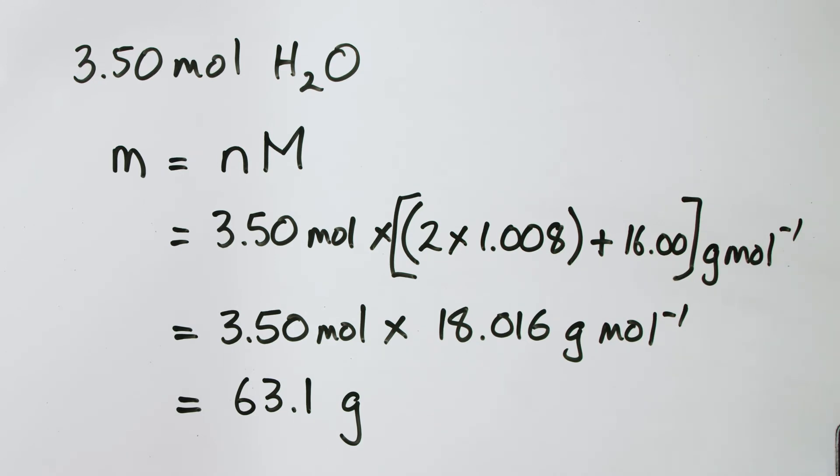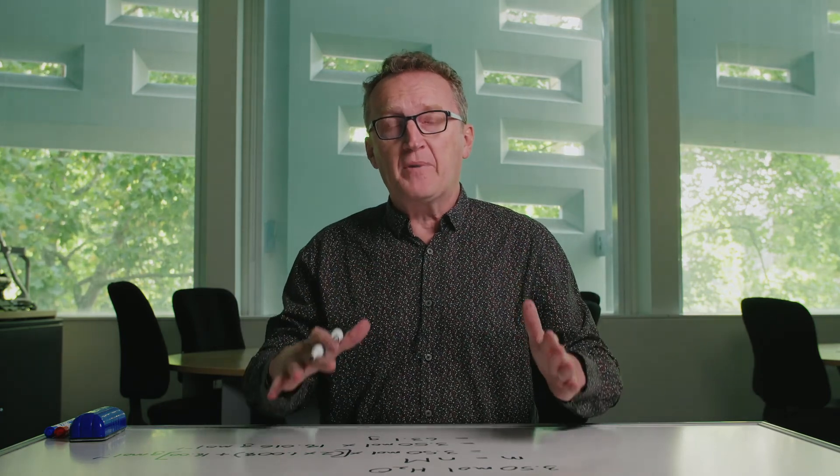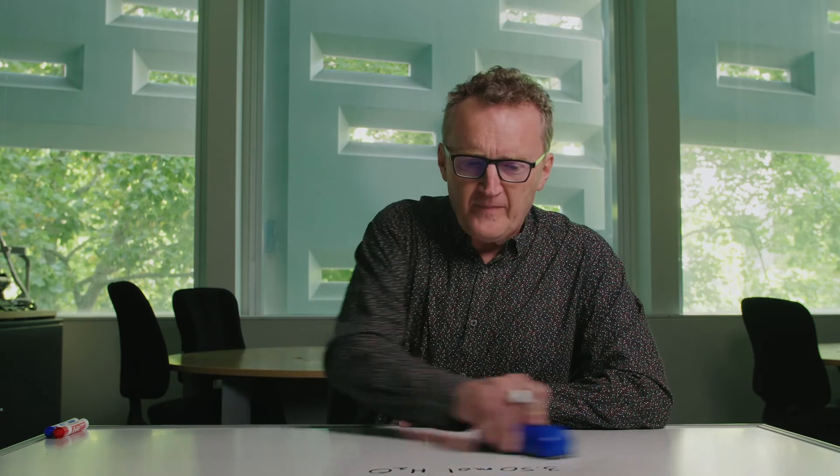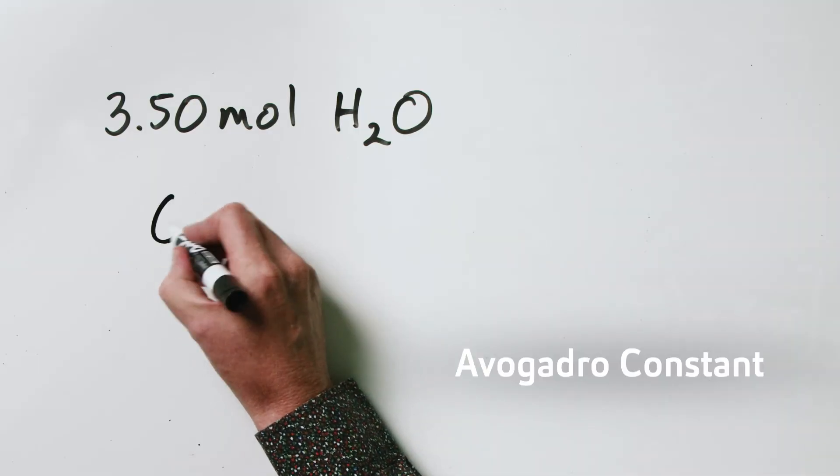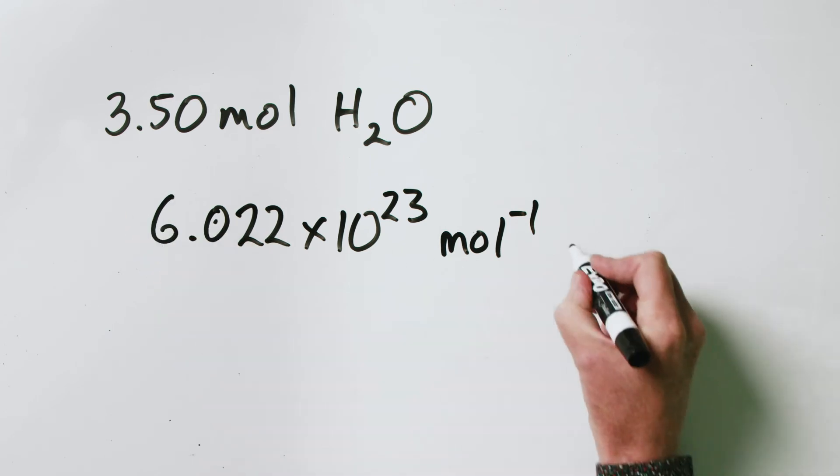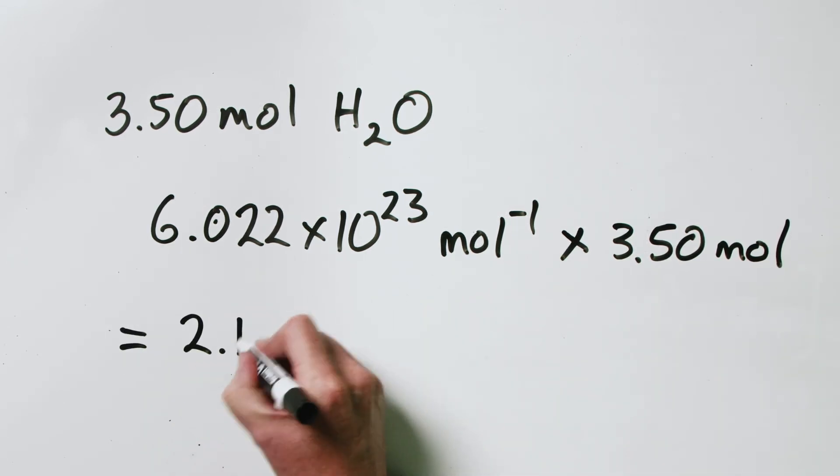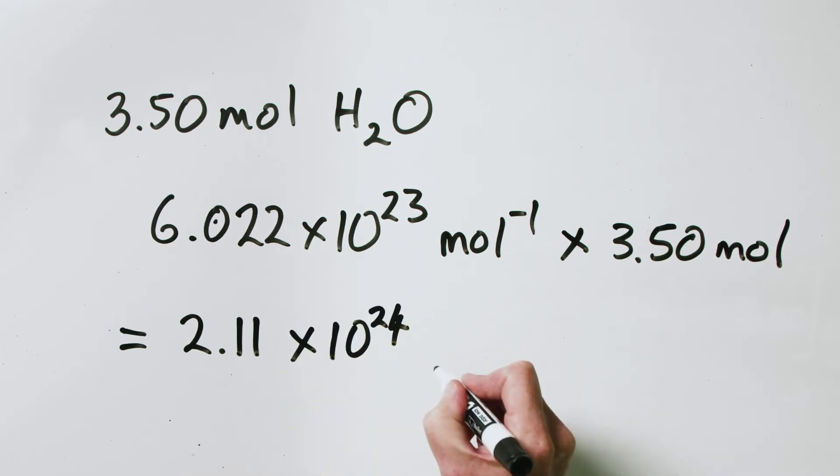To finish up, let's look at the relationship between numbers of moles, amount of substance, and the actual numbers of atoms or molecules. If we've got 3.5 moles of water, what actual physical number of molecules does that correspond to? To answer that, we need to remember the Avogadro constant.